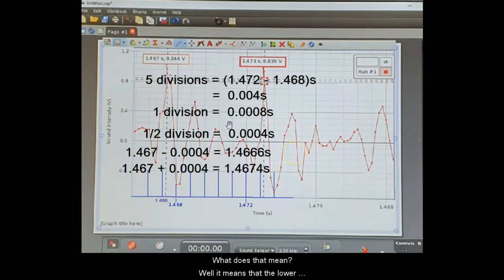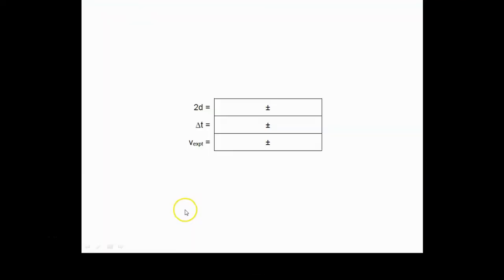What does that mean? It means that the lower value could be 1.4666 seconds, and our upper value could be 1.4674, taking this lower value down here. Are those values reasonable? Is it reasonable to say that this reading here of 1.467 could be as low as this division here? Well, that's plenty of space for our uncertainty. So we can go with that.